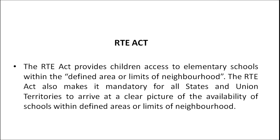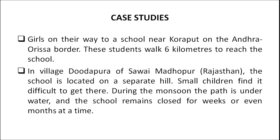Access is nothing but the distance — it should be accessible for the children to have education. The Right to Education Act provides children access to elementary schools within the defined area or limits of the neighborhood. The RTE Act also makes it mandatory for all states and union territories to arrive at a clear picture of the availability of schools within the defined areas or limits of the neighborhood. There is a photograph of girls on the way to a school near Kaurapat on the Andhra-Orissa border; these students walk six kilometers to reach the school.